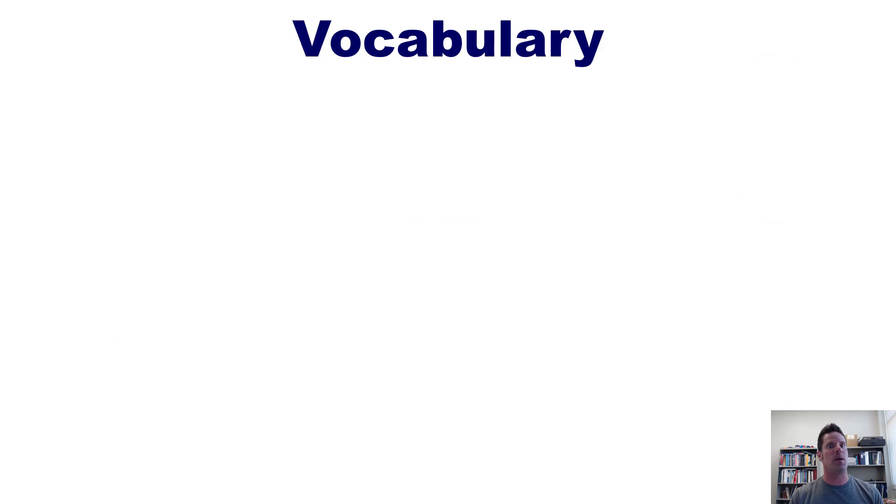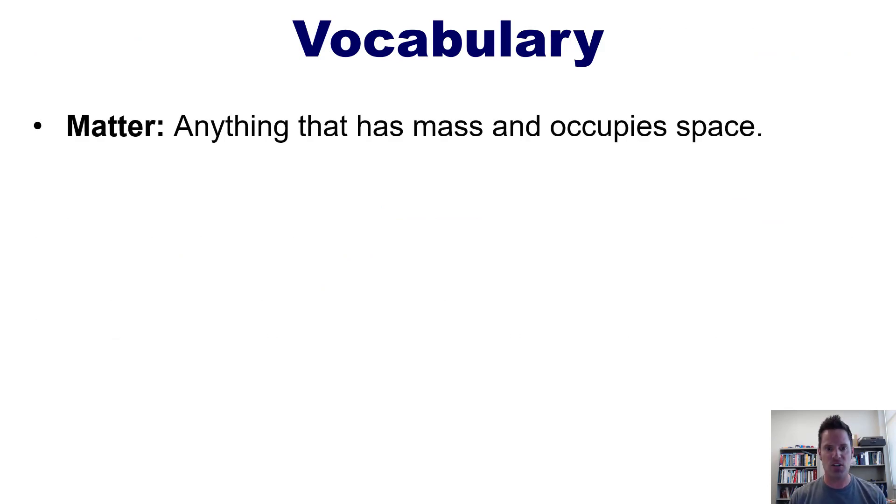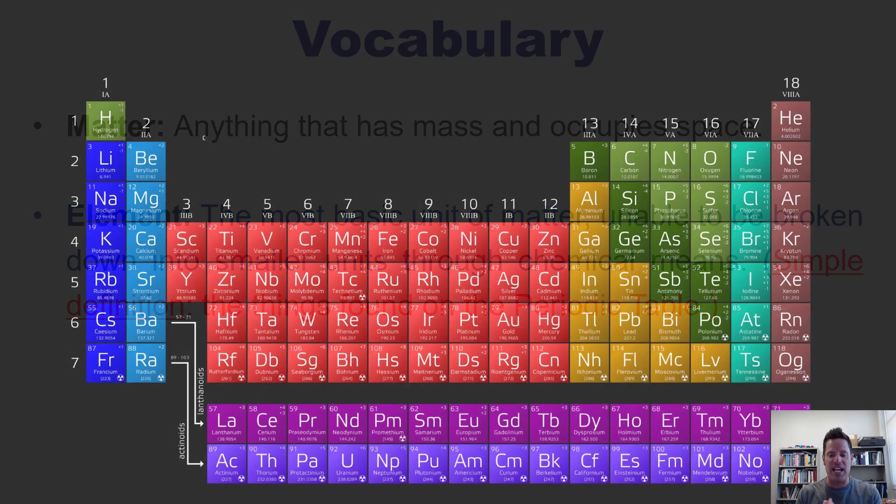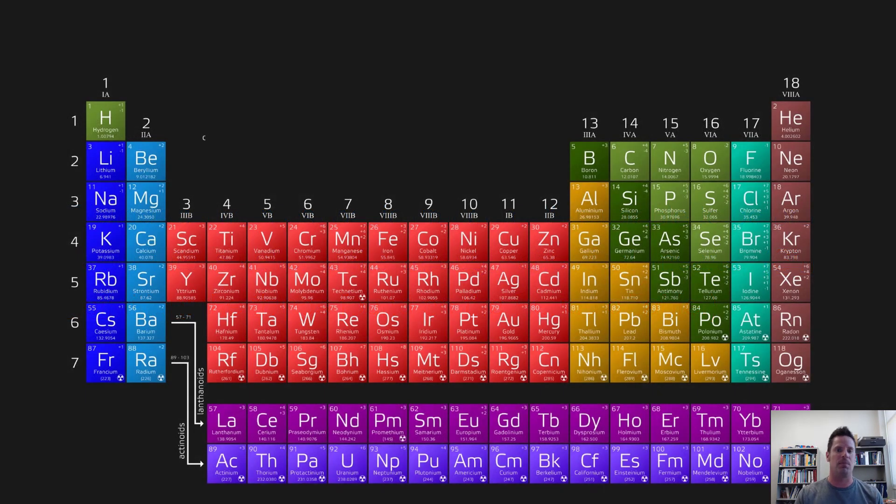The first term that we're going to learn is matter. Matter is anything that has mass and occupies space. The next one is element. An element is the most basic unit of matter, unable to be broken down into smaller units through chemical means. My simple definition of this is the things found on the periodic table, which we'll discuss in greater depth later on.